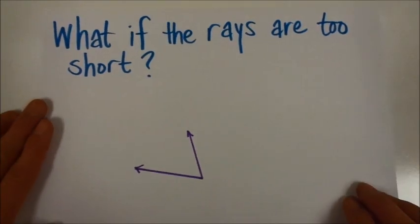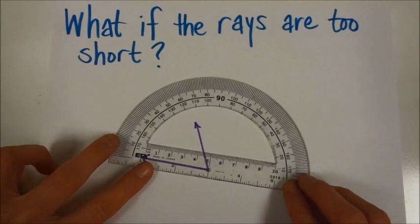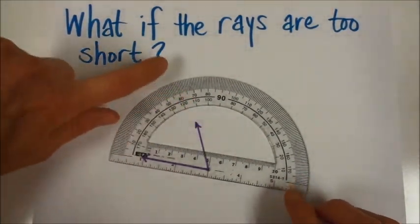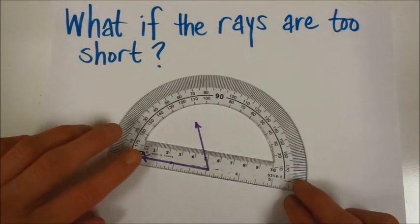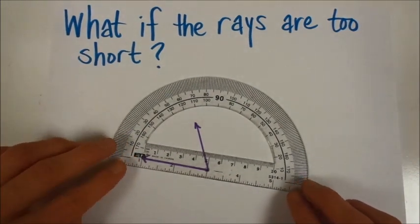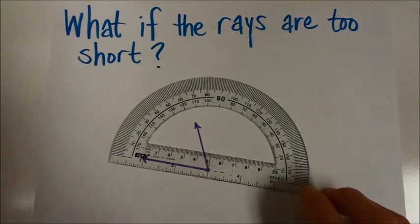The next what if to think about is, what if the rays are too short? When I lay my protractor down on this one, it doesn't point all the way, it doesn't touch one of my measurements up here. And I want to be really exact, I don't want to just guess. So the solution for this is to extend the lines of your angle.